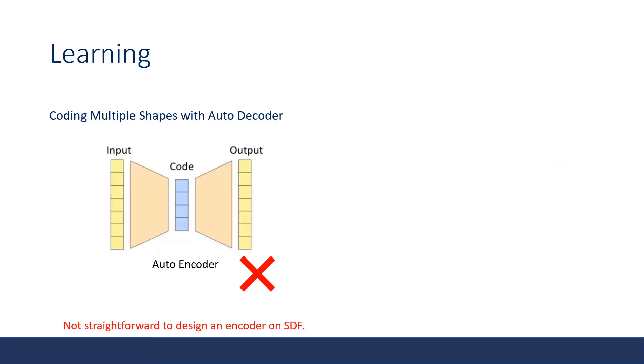Next, let's look at how to obtain meaningful codes for a batch of shapes. We want the shape code Z to encode the information of a single shape that can be interpreted by the decoder.